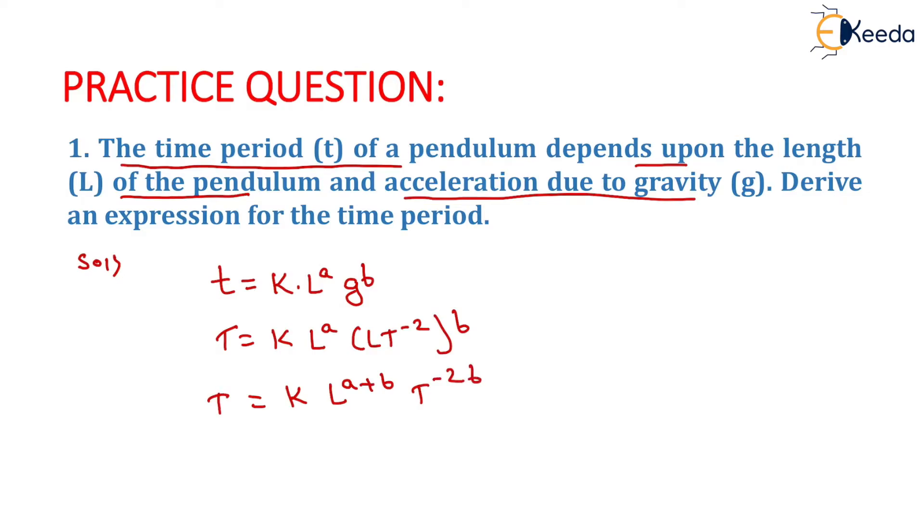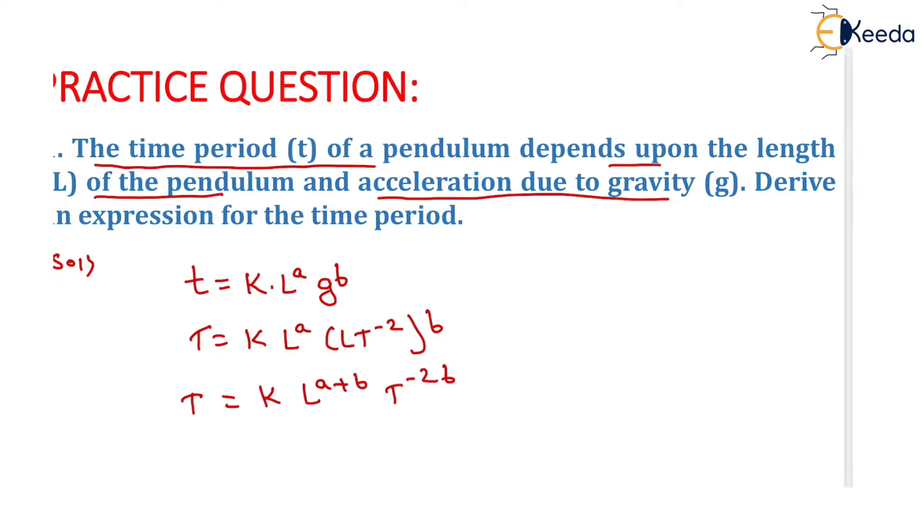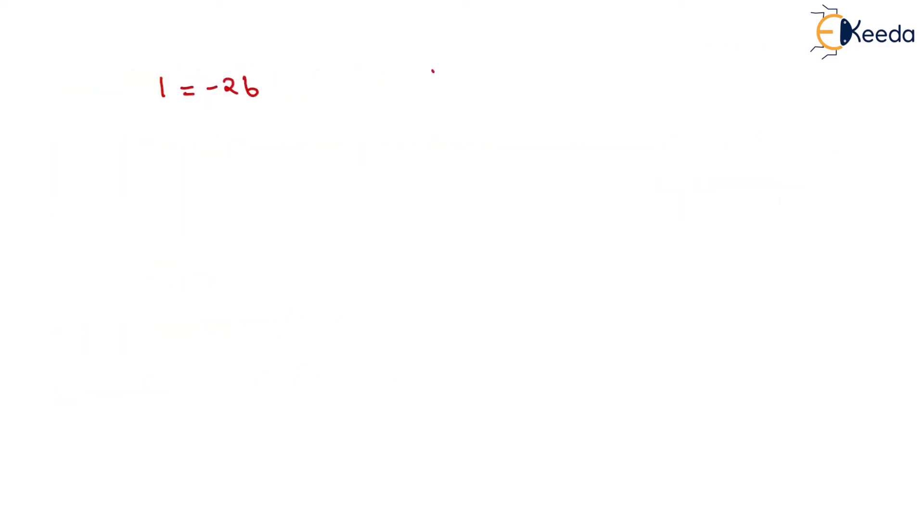Now equating the powers of T on both sides, we have 1 = -2b. So the value of b will be -1/2.